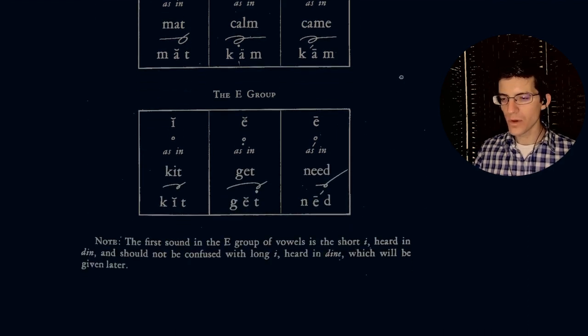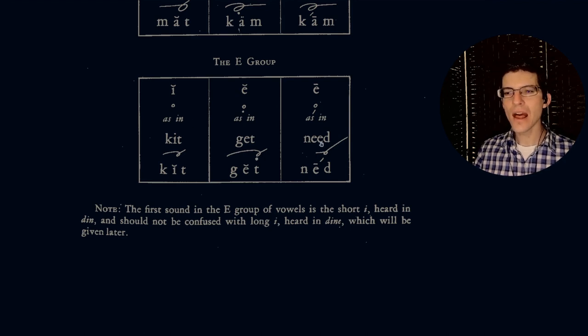And then we have our E group, which is E, E, E. So as in kit, and then E, as in get. And notice the same rules apply. If it's the short sound, then it has no indicator. It's the pure vowel by itself. If it has a dot underneath, it's what's known as the medial sound. And then if it has a stroke underneath, then it is the long sound. Note, the first sound in the E group of vowels is the short I heard in din, and should not be confused with long I heard in dine, which will be given later. And as we'll see later, that long I that they speak of is actually a diphthong. Notice you travel from one vowel to the next. That's a diphthong.